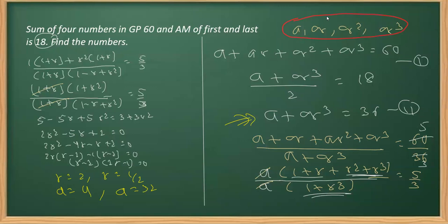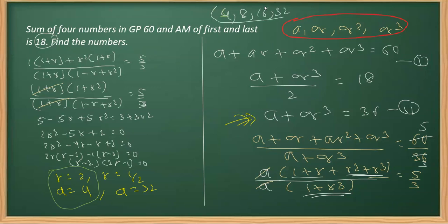Placing these values into the GP form: with a = 4 and r = 2, the four terms are 4, 8, 16, 32. Similarly, placing a = 32 and r = 1/2 gives the GP in reverse order: 32, 16, 8, 4. Both are valid answers.